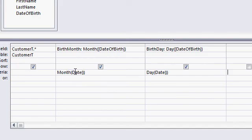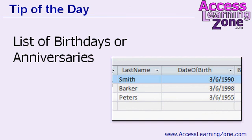Once again, the month of today's date and the day of today's date are the criteria, matched against the month and day of the date of birth field. Now that you have your list of birthdays you can use this query to feed any report or other form you want to generate. If you want to send mail, or generate a report to print and give to your staff on the phones, whatever you want to do with this information, you have it in a query.